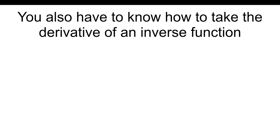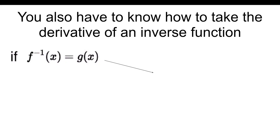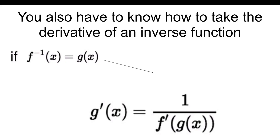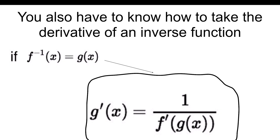You also have to know how to take the derivative of an inverse function. If f and g are inverses of each other, then g prime of x equals 1 over f prime of g of x. This is something you do have to memorize — I personally got it on a multiple choice question myself. So take a second to memorize this.